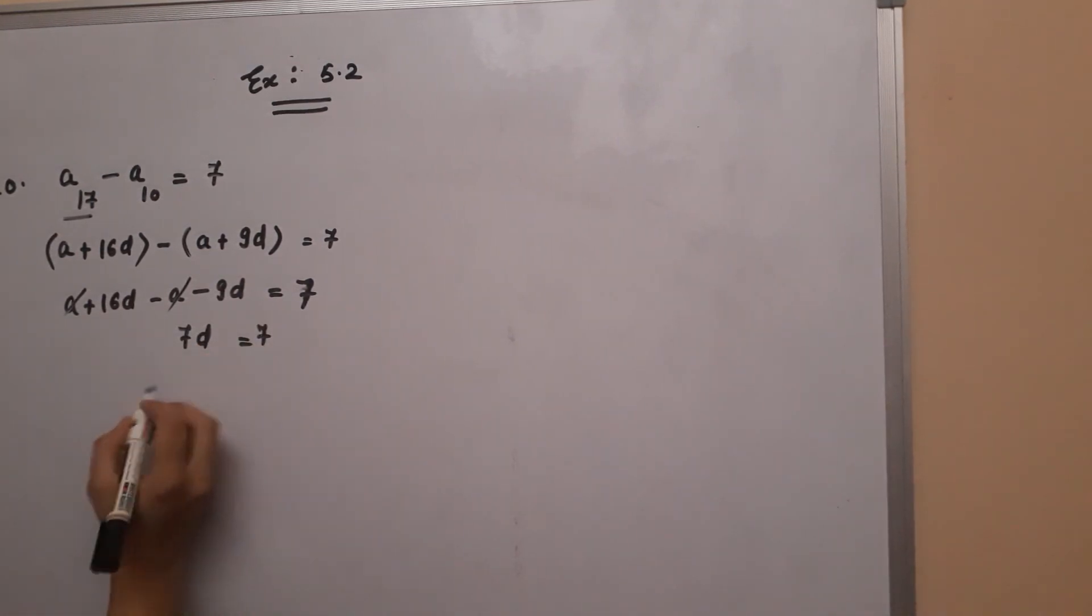That equals 7, and D will be 7 divided by 7, which is 1. So the value of D that is asked in the question is 1. The difference is 1.